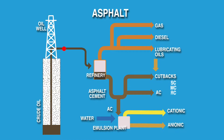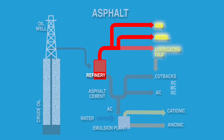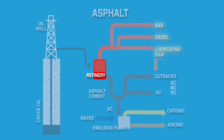The crude oil is brought to the surface and transported to the refinery, where it is processed into different products. The first products used in the distillation process are called light ends, such as gasoline, diesel fuel, and lubricating oils. Eventually, what is left at the bottom, or the last stage, is the asphalt cement.